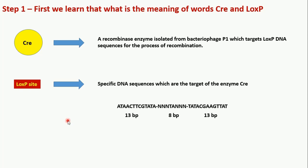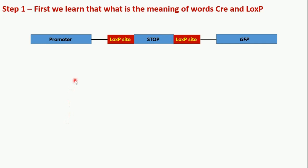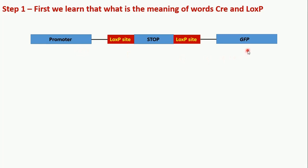We will be seeing a simple diagrammatic example to understand these two things in detail. To understand the function of Cre and loxP, I have created an artificial condition where we have the promoter of a gene and the coding sequence of that gene. In this example we are using the coding sequence of GFP, that is Green Fluorescent Protein. In between the promoter and GFP we have added a stop sequence, and this stop sequence is flanked by loxP sites.